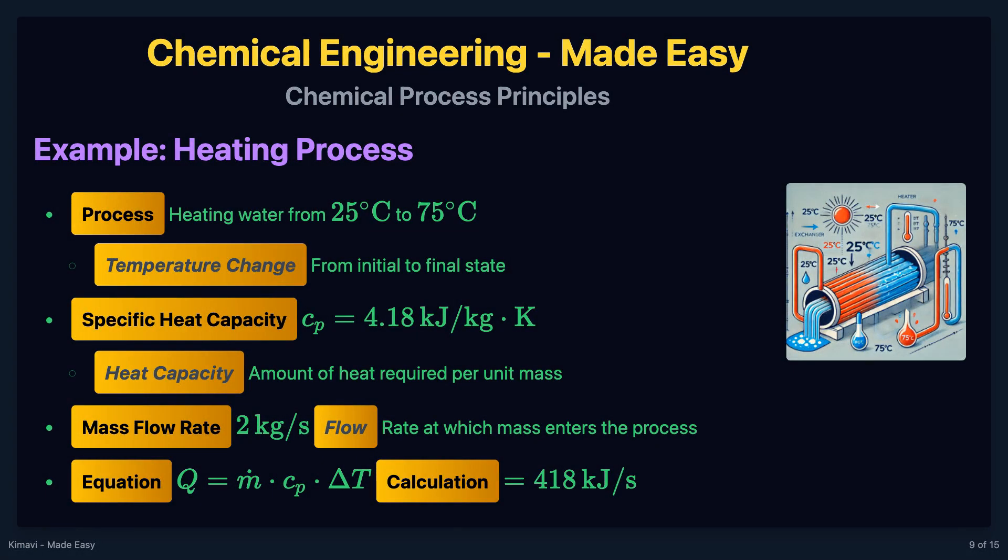Consider a process where a stream of water is heated from 25 degrees Celsius to 75 degrees Celsius. The energy required to heat the water can be calculated using the specific heat capacity of water, which is 4.18 kilojoules per kilogram per Kelvin. If the mass flow rate of water is 2 kilograms per second, the energy balance equation is Q equals the mass flow rate times the specific heat capacity times the temperature change. Substituting the values, Q equals 2 kilograms per second times 4.18 kilojoules per kilogram per Kelvin times 50 Kelvin, which equals 418 kilojoules per second.